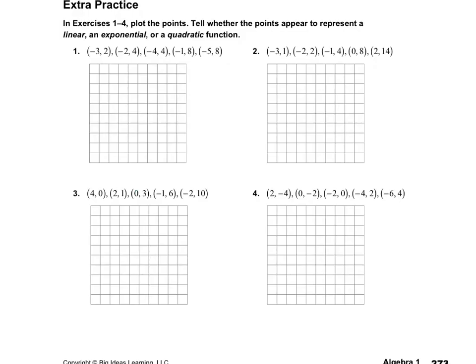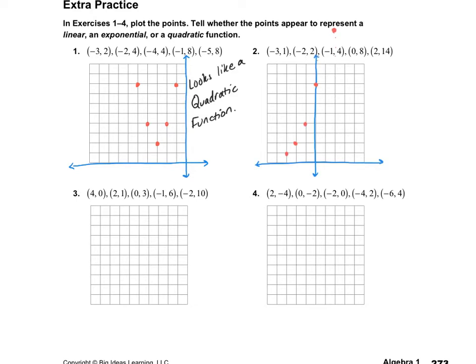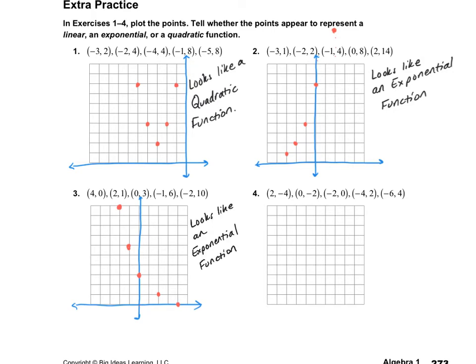On the next page, for examples 1 through 4, we need to plot the points and then tell whether the points appear to be linear, exponential, or quadratic. When I graph number 1, it looks to be quadratic. Number 2 looks like an exponential function. Number 3 also looks like an exponential function. And number 4 looks like a linear function.